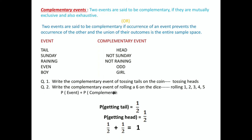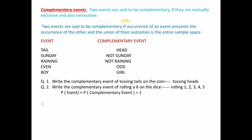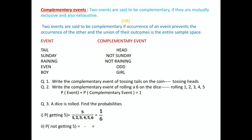We can conclude that probability of an event plus probability of its complementary event equals 1. For example, when a die is rolled, the probability of getting 5 is 1 by 6. The probability of not getting 5 is 1 minus 1 by 6 = 5 by 6. So we conclude: probability of a complementary event = 1 minus probability of the event.